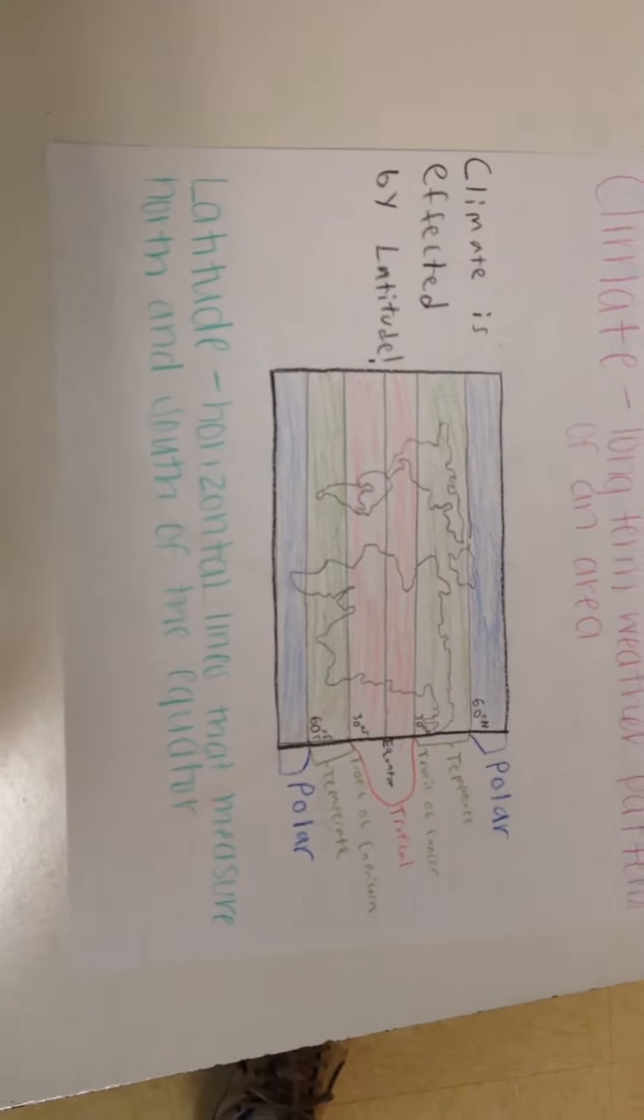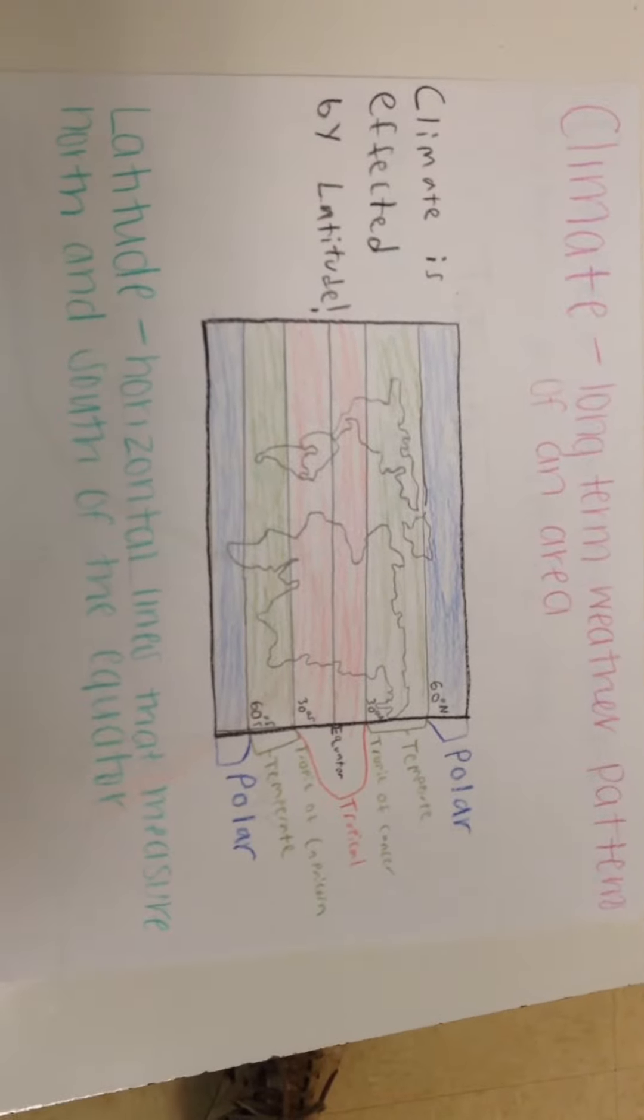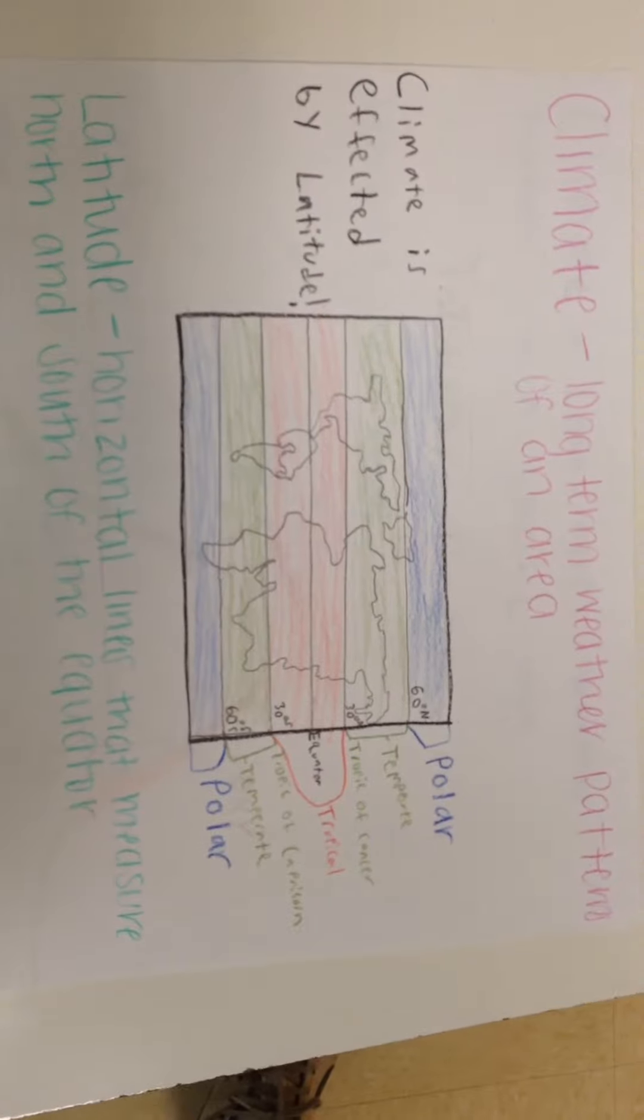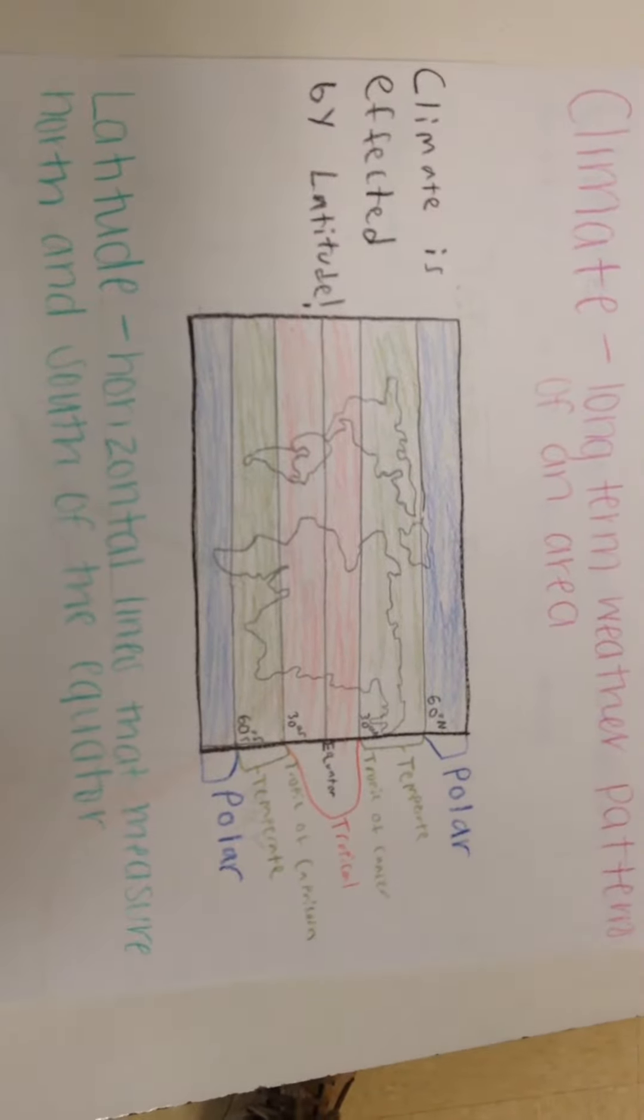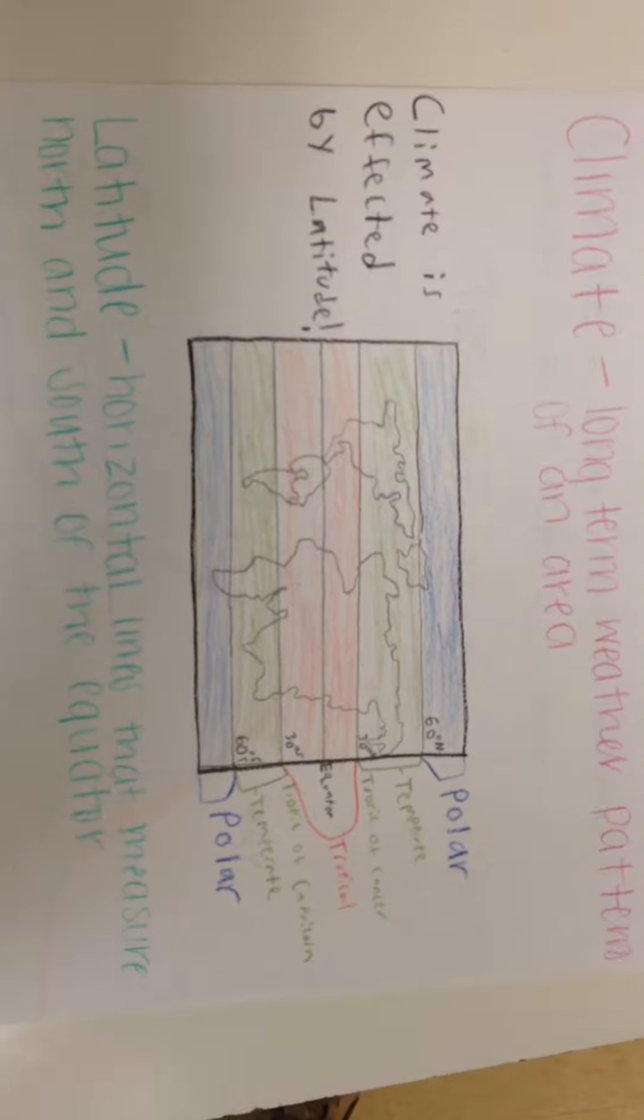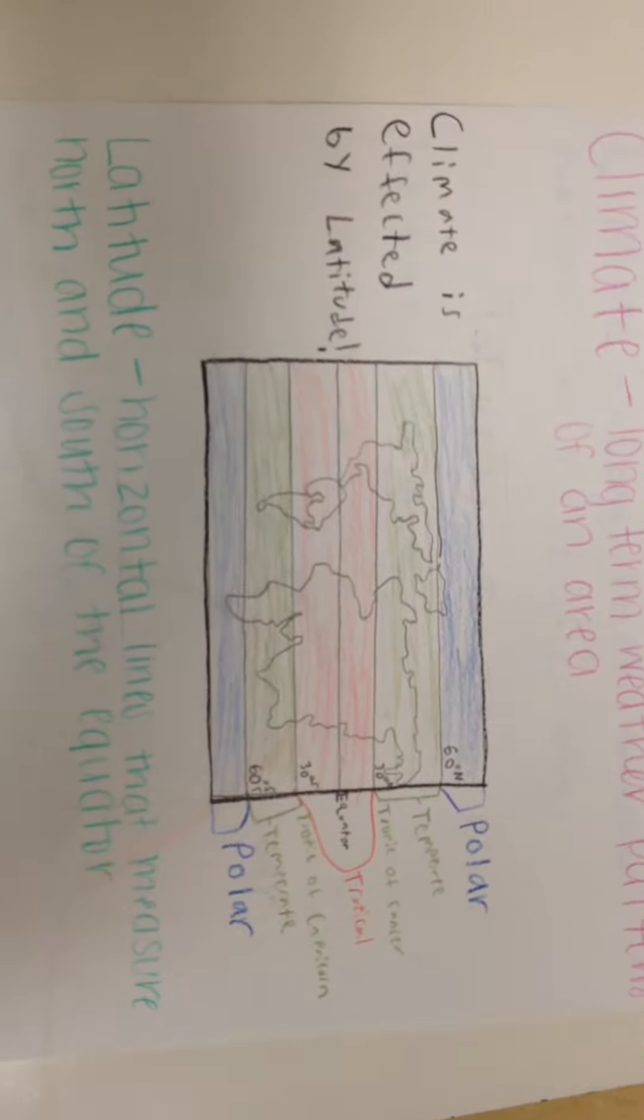In the diagram, polar, which is from 60 degrees north and 60 degrees south, is the coldest, so climate would be affected there and it would be colder. From 30 degrees north and 30 degrees south to the Arctic Circle is the temperate zones, which would be in temperate temperature.